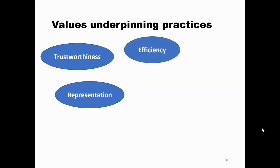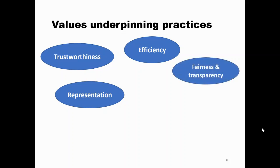Efficiency relates to how straightforward a type of evidence is to process compared to others — an especially pertinent consideration where there is a very large number of applications to be screened within given time constraints. One-on-one interviews were mentioned on multiple occasions as a useful and somewhat reliable means of determining language proficiency, although this is a much greater investment in time and resources and is likely impossible when there are thousands of student applications. Fairness and transparency were seen as providing a good foundation for what could be perceived as inflexible selection practices, while transparency in the use and weighting of different forms of evidence was accorded high importance by one of our panel members.